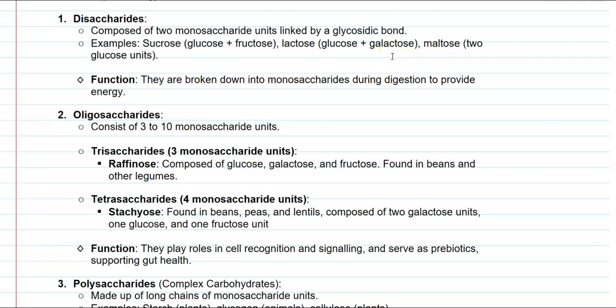The next group is the oligosaccharides, which consist of three to ten monosaccharide units bonded together. Classical examples are trisaccharides and tetrasaccharides. Trisaccharides consist of three monosaccharide units; an example is raffinose, composed of glucose, galactose, and fructose — a sugar commonly present in beans and legume crops. Tetrasaccharides consist of four monosaccharide units bonded together. A classical example is stachyose, commonly found in beans, peas, and lentils.